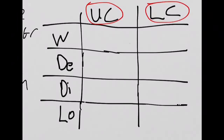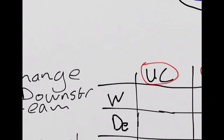Some of the characteristics we are going to look at occur down the left hand side of the table. W stands for width, DE stands for depth, DI stands for discharge, and LO stands for load.